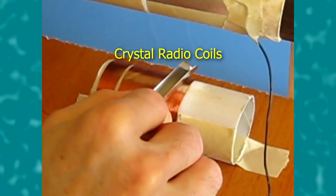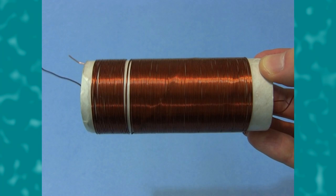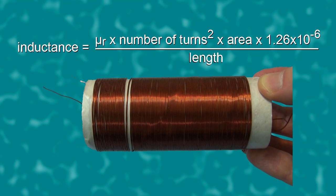Next, for my crystal radios, I needed coils. These are loops of wire wrapped around something with a few or many turns. Here's a formula for the inductance of this type of coil. Some of the things you can play with are the number of turns, the cross sectional area, and the length.